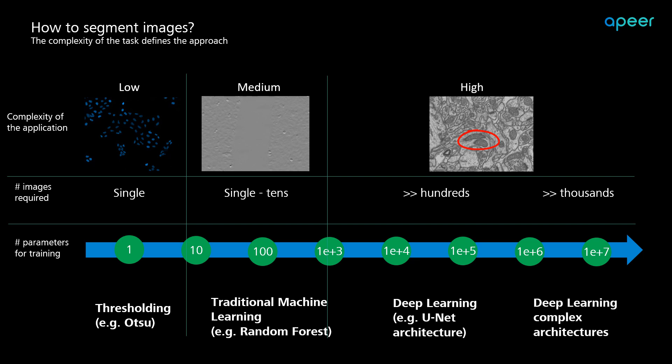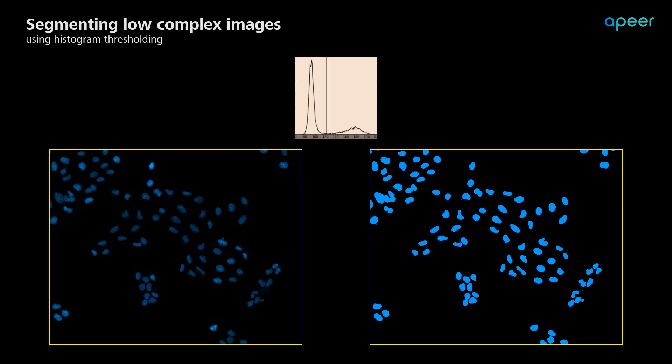Now let's go through a few example cases where we look at the segmentation using thresholding, traditional machine learning, and deep learning. Let's start with histogram thresholding of low-complex images. As you can see, a single threshold value can easily separate the background pixels from the pixels corresponding to our regions of interest, in this example, nuclei.